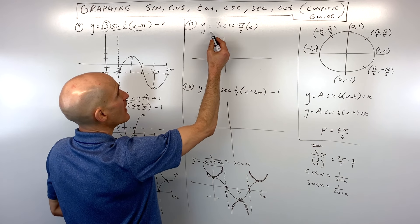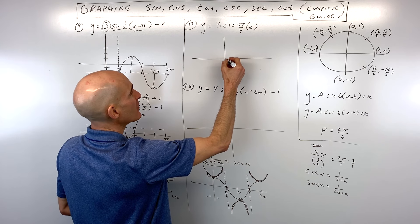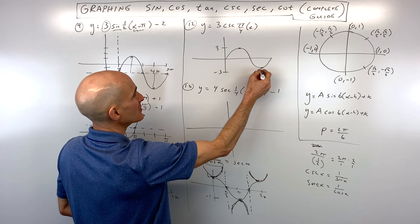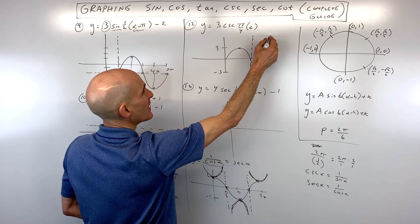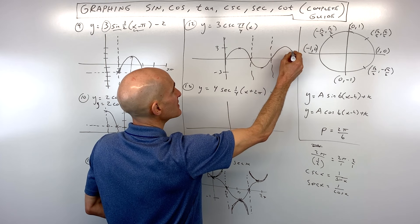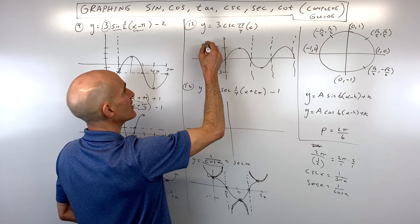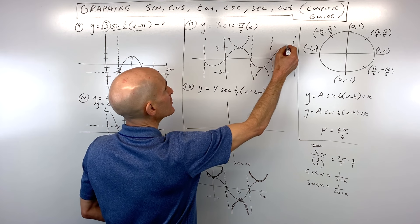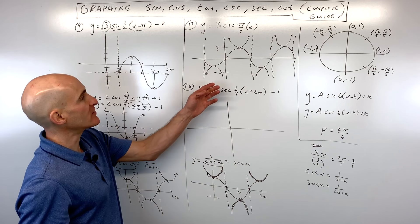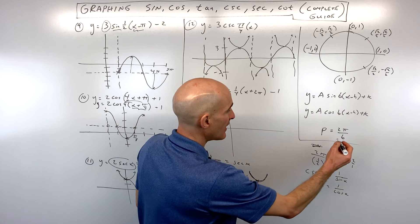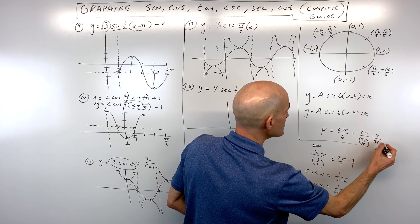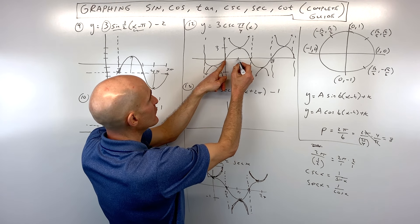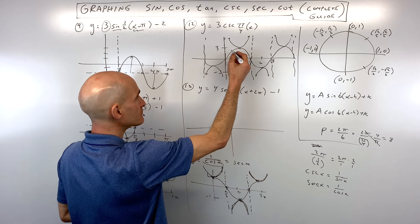To graph y equals three cosecant of pi over four times x, start by graphing y equals three sine of pi over four times x. The period is two pi divided by pi over four — dividing by a fraction means multiplying by the reciprocal, so the pi's cancel and the period is eight. So the x-axis scale divides eight into four pieces: two, four, six, eight. The amplitude is three, so the sine graph reaches a maximum of three and minimum of negative three. Wherever it crosses the x-axis are the vertical asymptotes for the cosecant. Draw more cycles if needed, then draw the cosecant graph approaching those asymptotes.